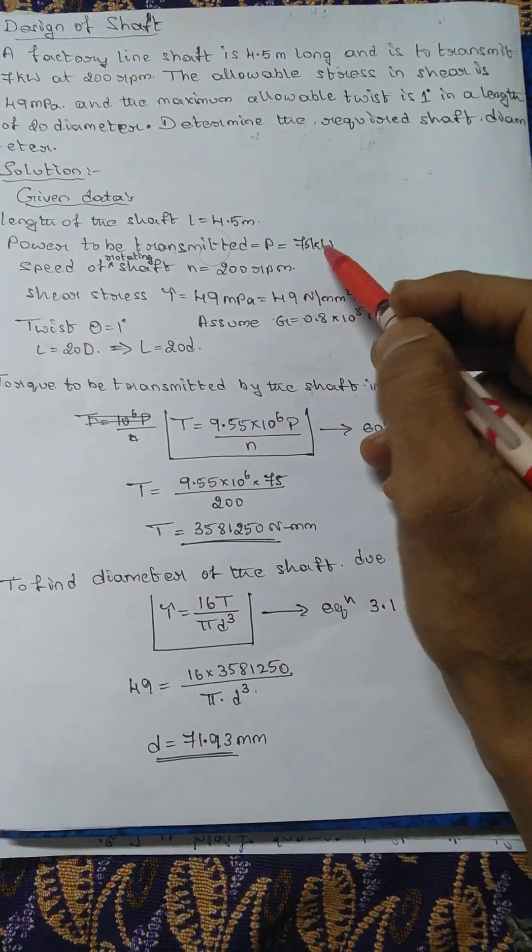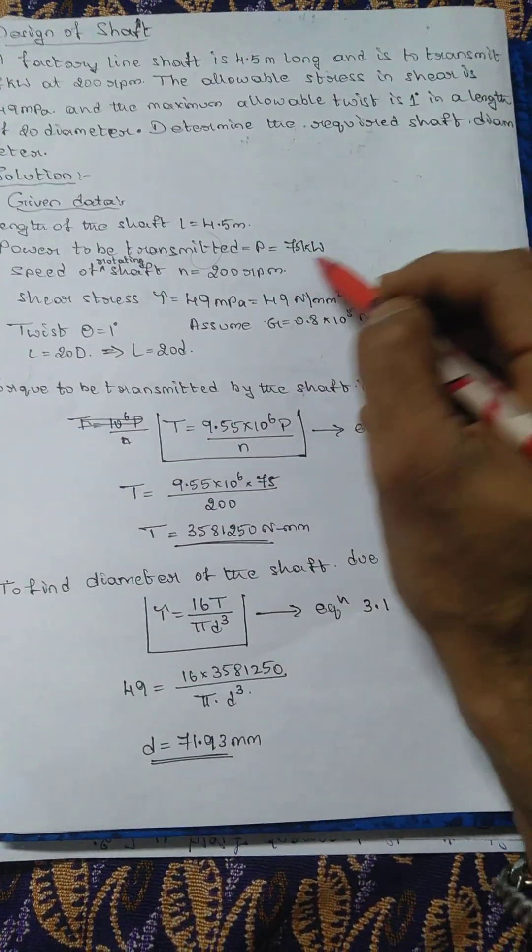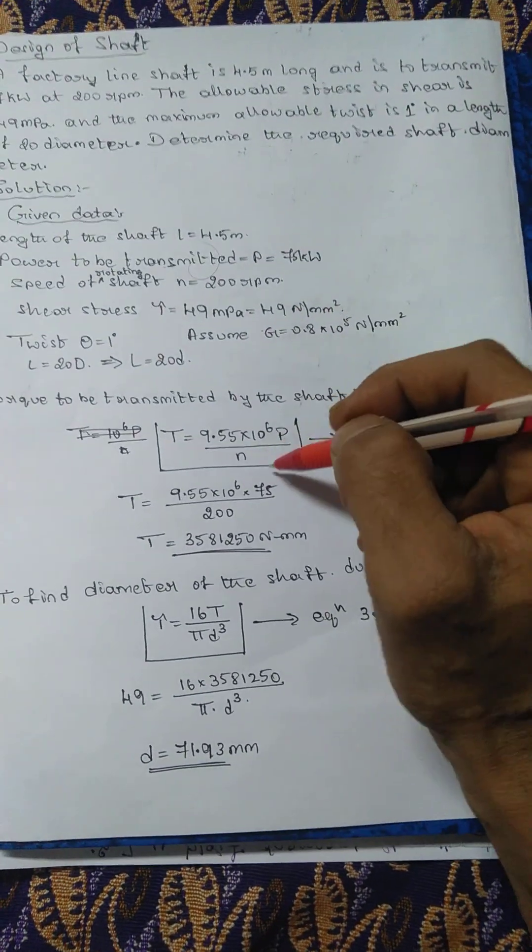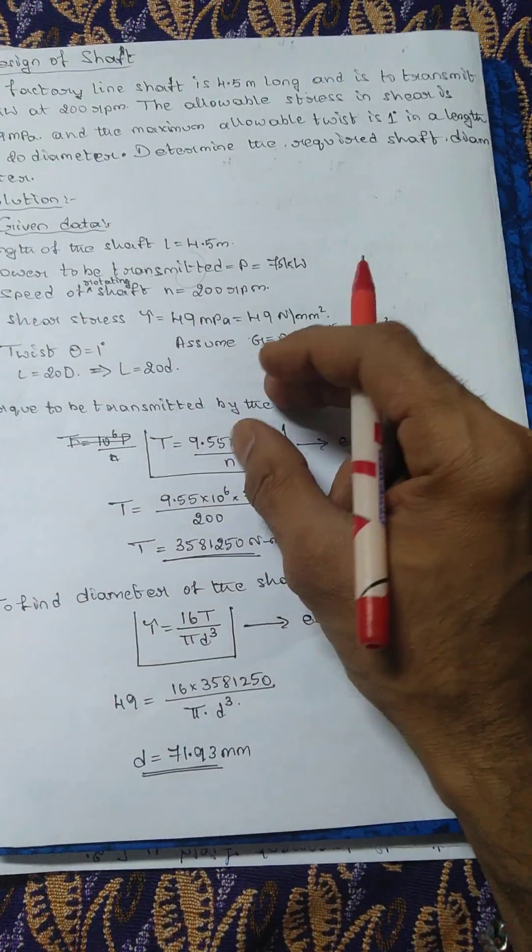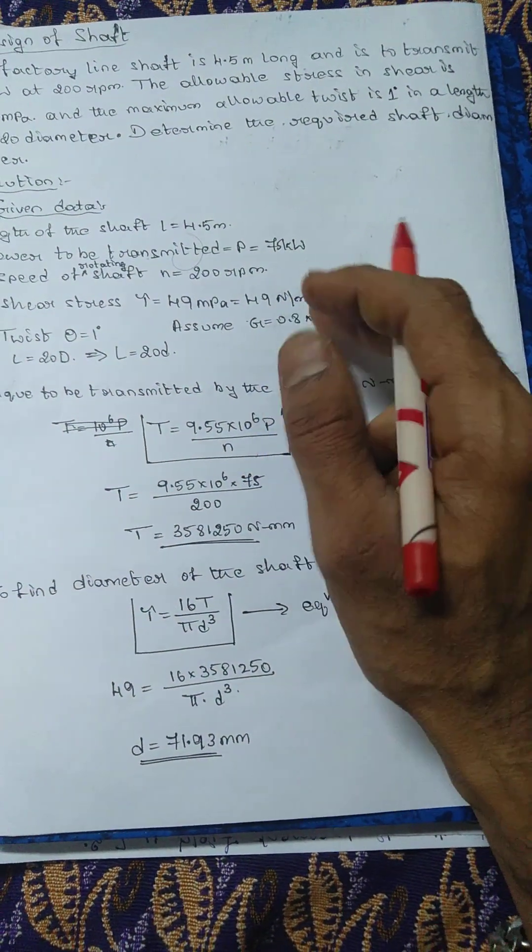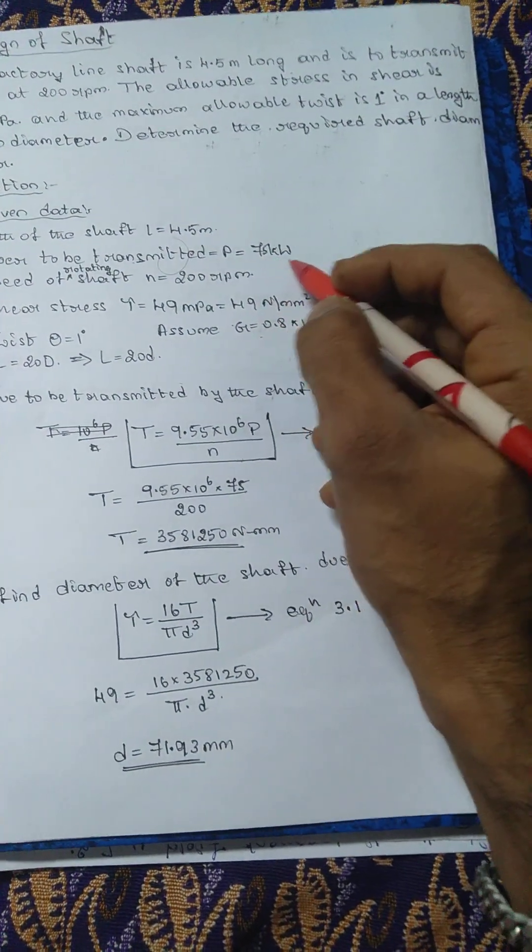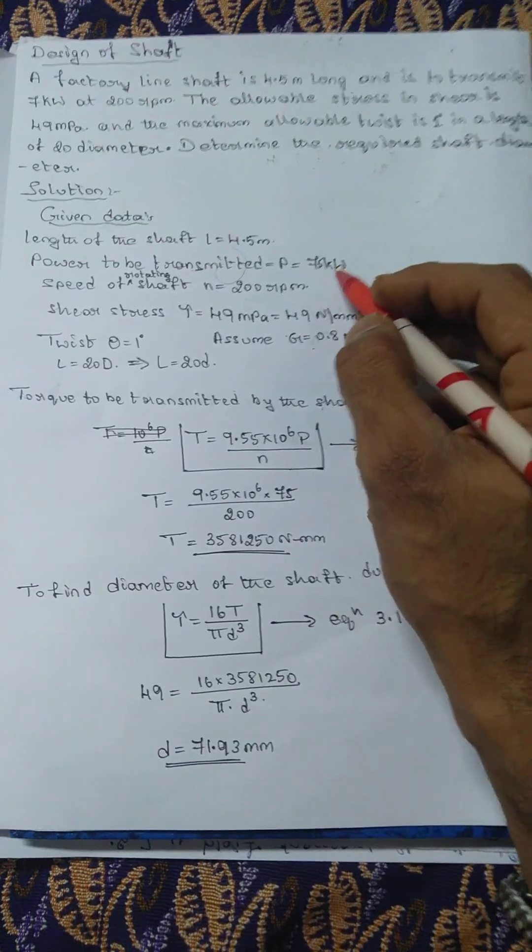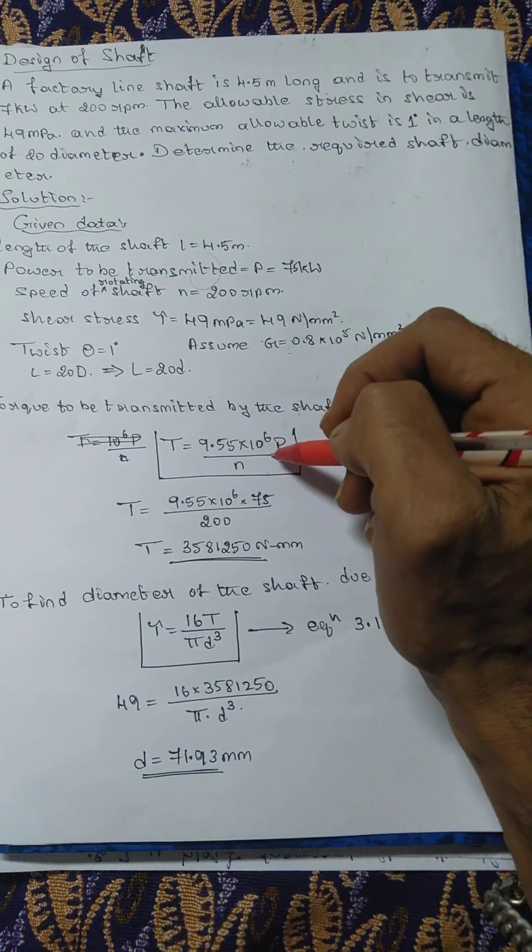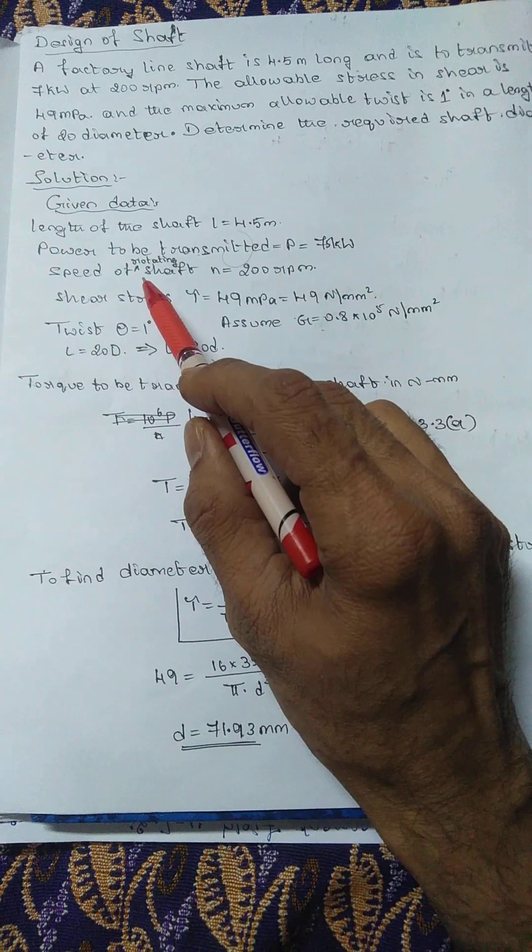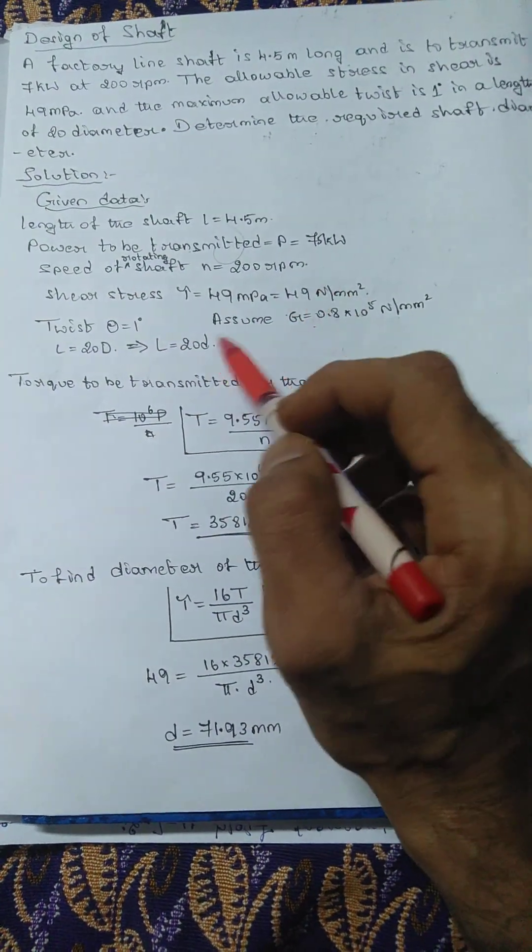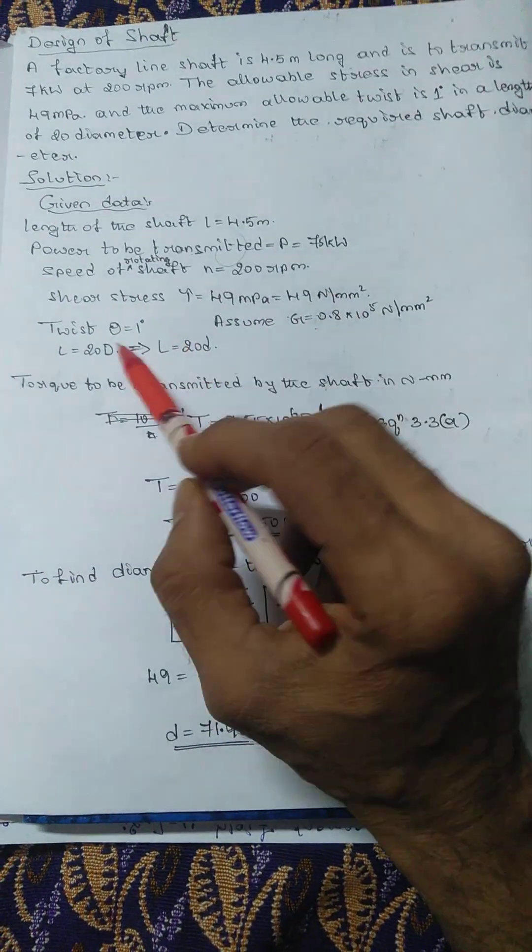What data you have to note down is according to the data handbook equations. In particular chapters there will be terms and related units, so according to that unit you have to note down the data and substitution. Next, the speed is given, that is 200 rpm, shear stress, and angle of twist.